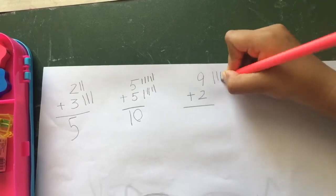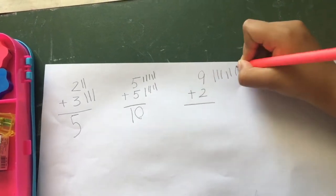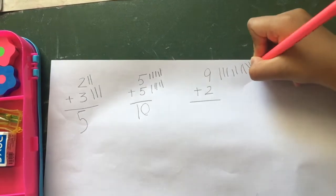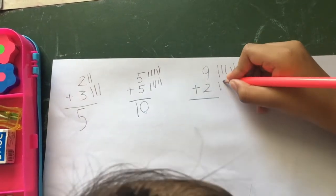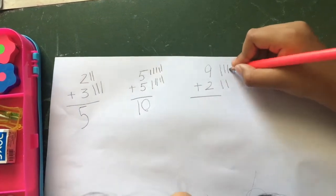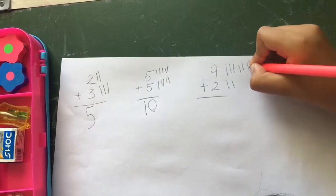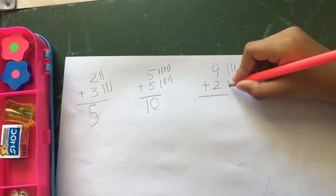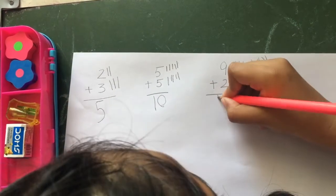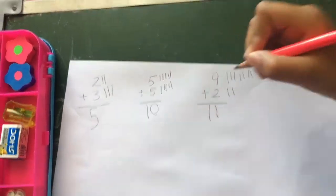1, 2, 3, 4, 5, 6, 7, 8, 9. And 1, 2. So 1, 2, 3, 4, 5, 6, 7, 8, 9, 10, 11. So we have to write 11.